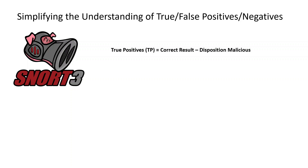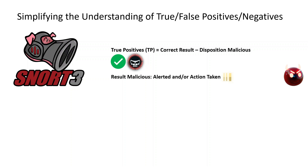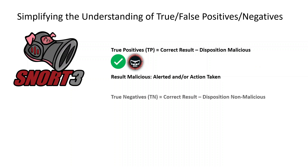A true positive is a correct result. The disposition is malicious intent — it's malicious and it did detect that outcome. The result is malicious, it was alerted on, and action has been taken.